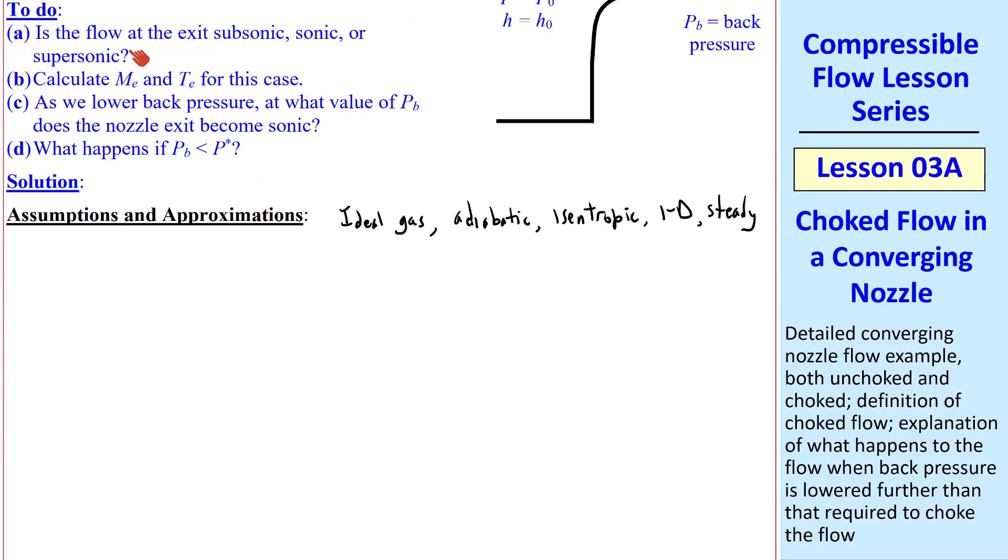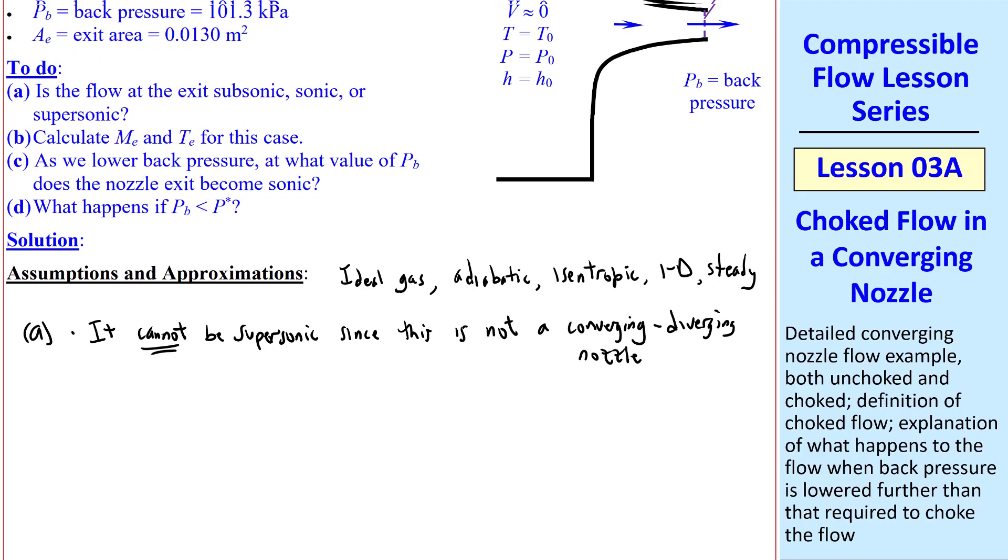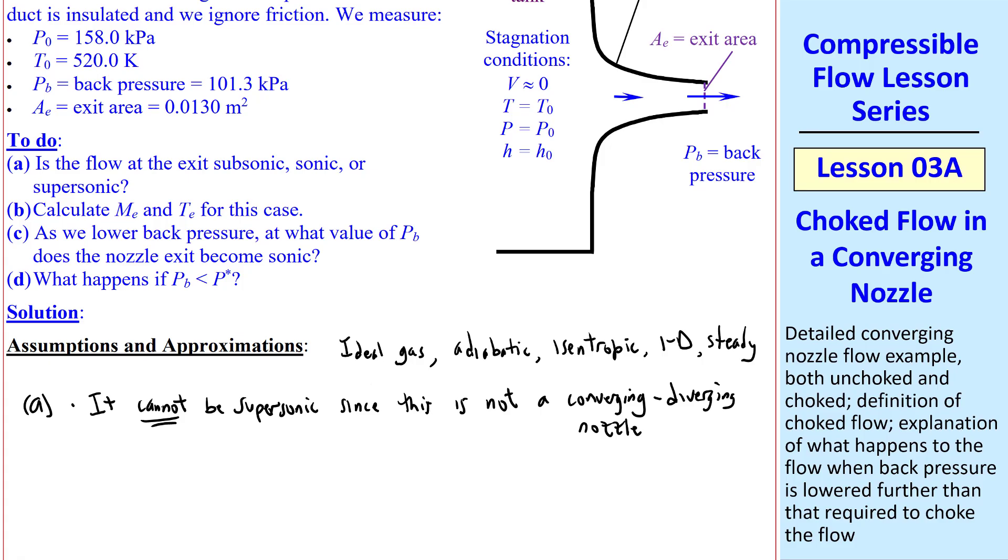Part A is the flow at the exit subsonic, sonic, or supersonic. Well, we've learned from previous lessons that it cannot be supersonic, since this is not a converging-diverging nozzle. It's simply a converging nozzle. There is a minimum area, but we don't go up to a larger area after that, which is the only way the flow can become supersonic in a duct.